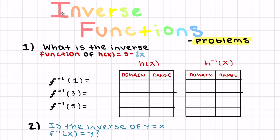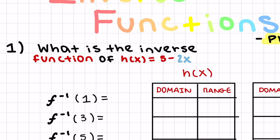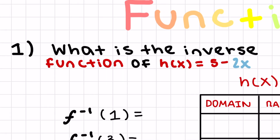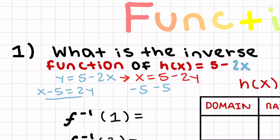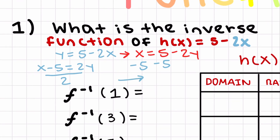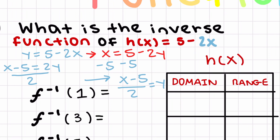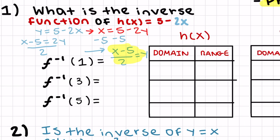Now let's look at some problems. What is the inverse function of h(x) = 5 - 2x? First rewrite as y = 5 - 2x. Then switch x and y: x = 5 - 2y. Now solve for y — subtract 5 from both sides to get x - 5 = -2y, then divide by 2 on both sides. Your inverse function is (x - 5) / 2. You can write this as y or as the inverse of h(x).